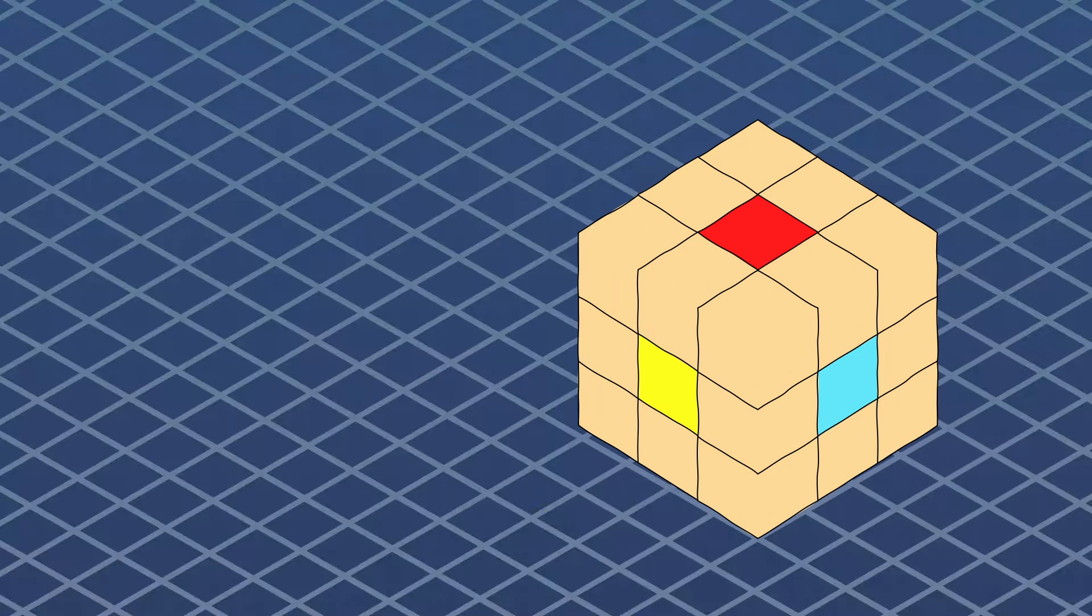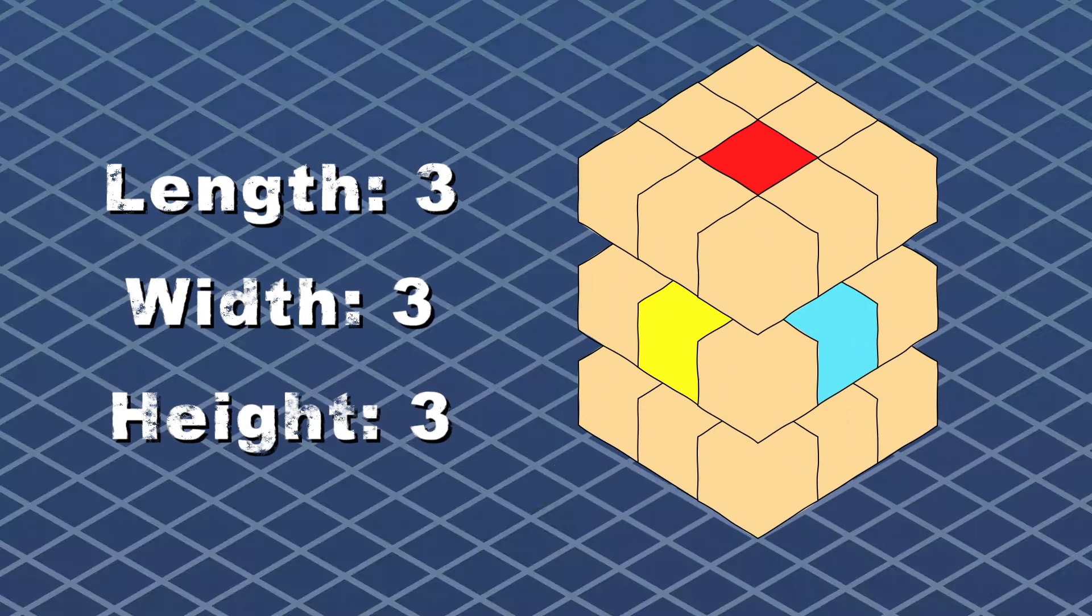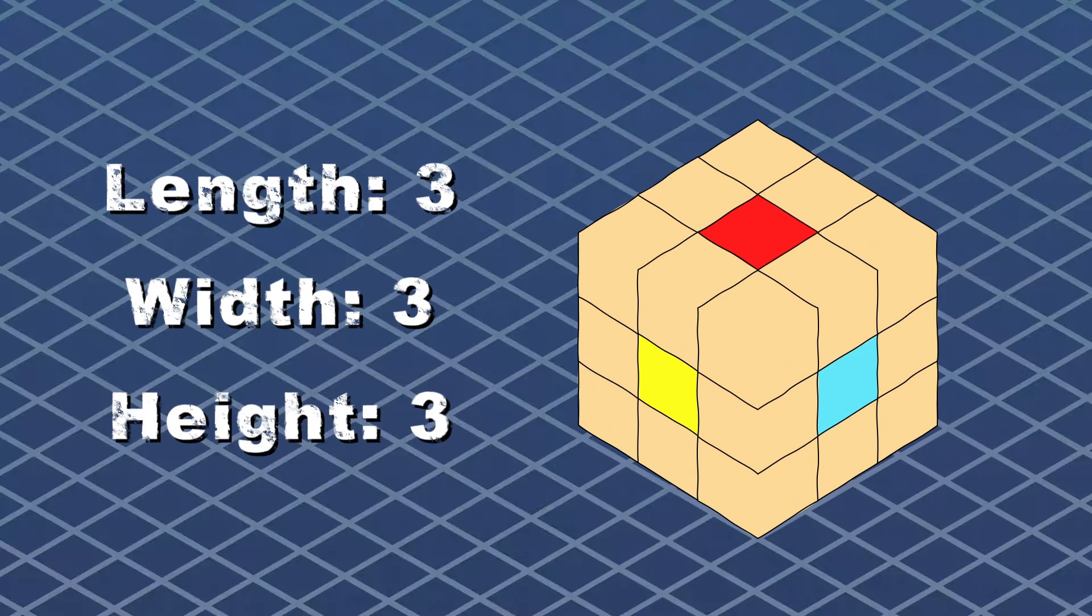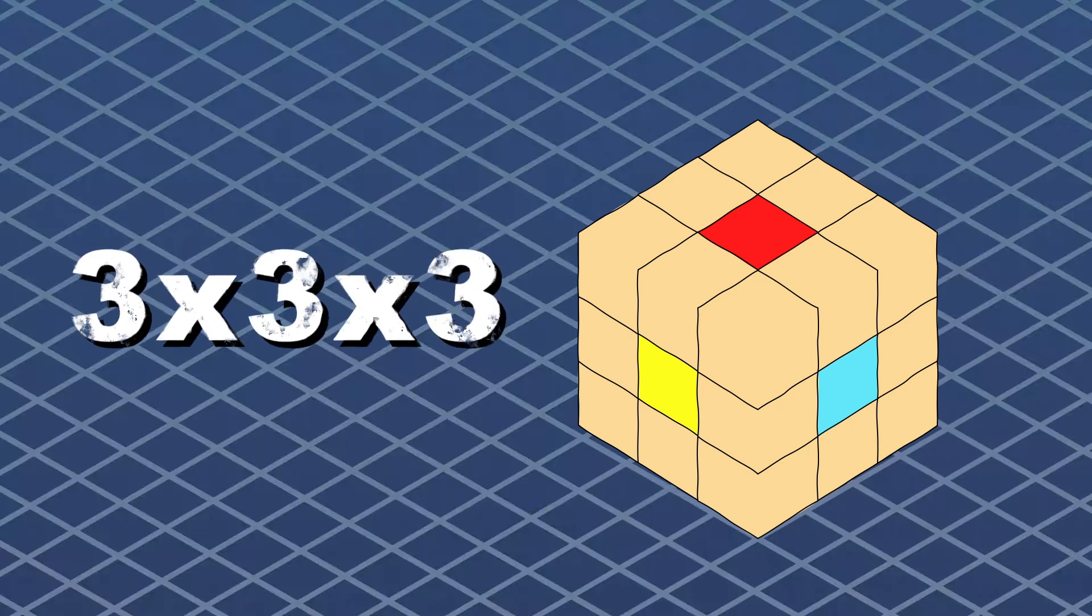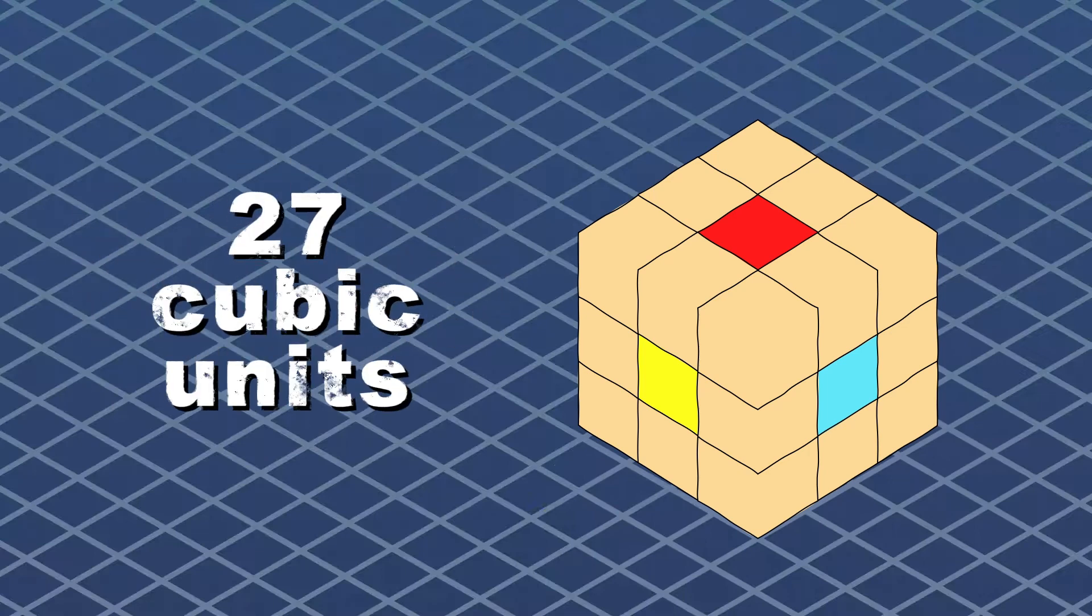We have a cube here, as you plainly see. The length, width and height of the cube all equal 3. So to find the volume of the cube, we have to multiply 3 times 3 times 3, now give it a try. 27 is the volume in cubic units, that's the answer we've got.